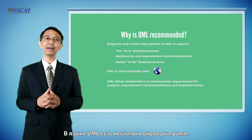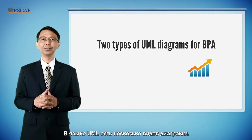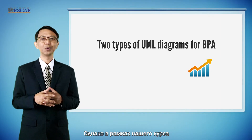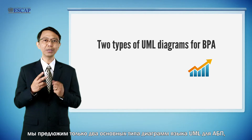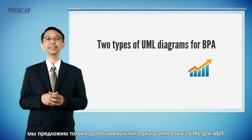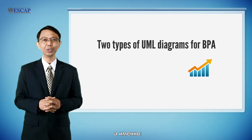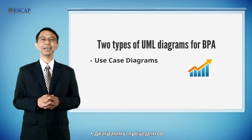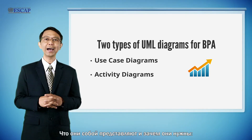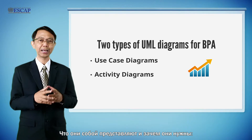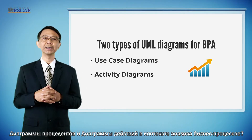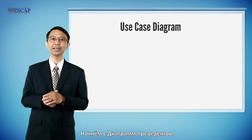There are several types of diagrams in Unified Modeling Language, but for our context, we would recommend only two main types of UML diagrams for business process analysis: namely, use case diagrams, and secondly, activity diagrams. Let us start discussing about use case diagrams and their purposes in the context of business process analysis.